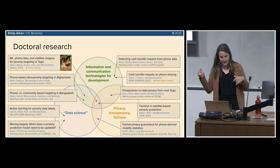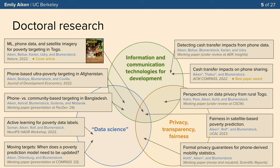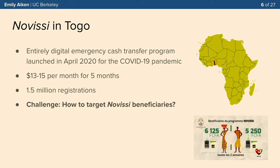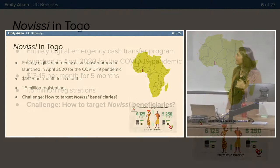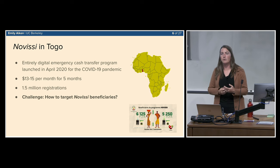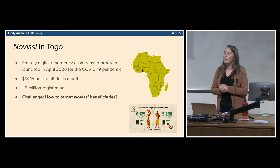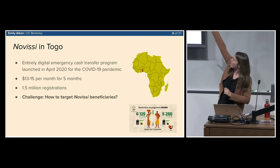I want to spend most of my talk on a deep dive into one project that gets at the heart of all three themes: a deployed project working with the government of Togo to build a cash transfer program using machine learning and digital data for targeting. This is joint work with a number of wonderful co-authors. I'll start with the backstory — this project took place during the COVID-19 pandemic. COVID hit Togo in roughly March 2020.